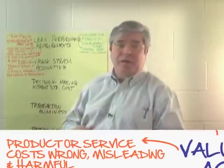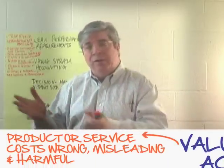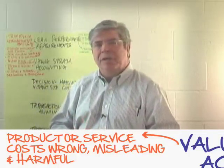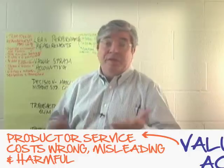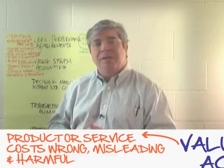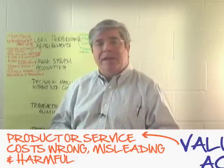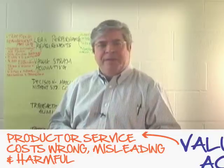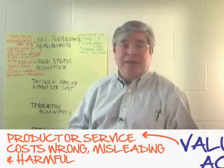A second problem is this idea of calculating a product cost — the cost of a product you're making, a service you're providing, or a process you're completing. This idea of calculating a product cost is very misleading. Most companies calculate a standard cost that includes material, labor, and overhead, and that creates a lot of distortion of what the true cost is, leading to very bad decision making.